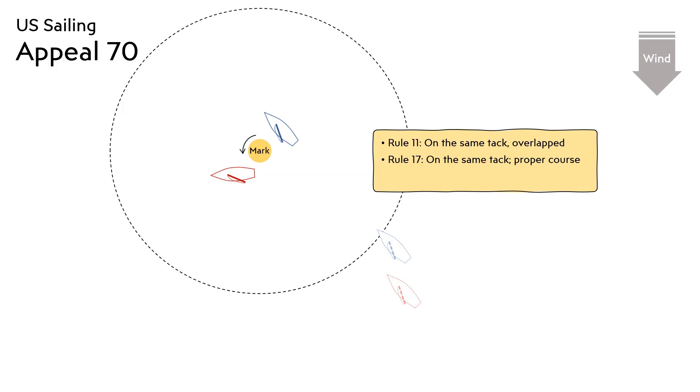Under Rule 18.2b, because the blue boat was overlapped outside of the red boat when the boats reached the zone, the blue boat was required to give the red boat mark room. The protest committee disqualified the blue boat for breaking rules 11 and 18.2b.